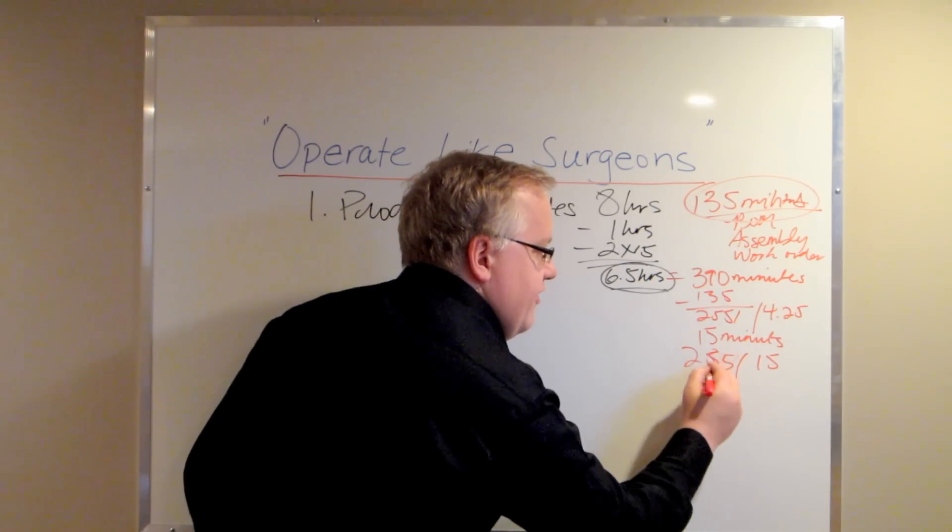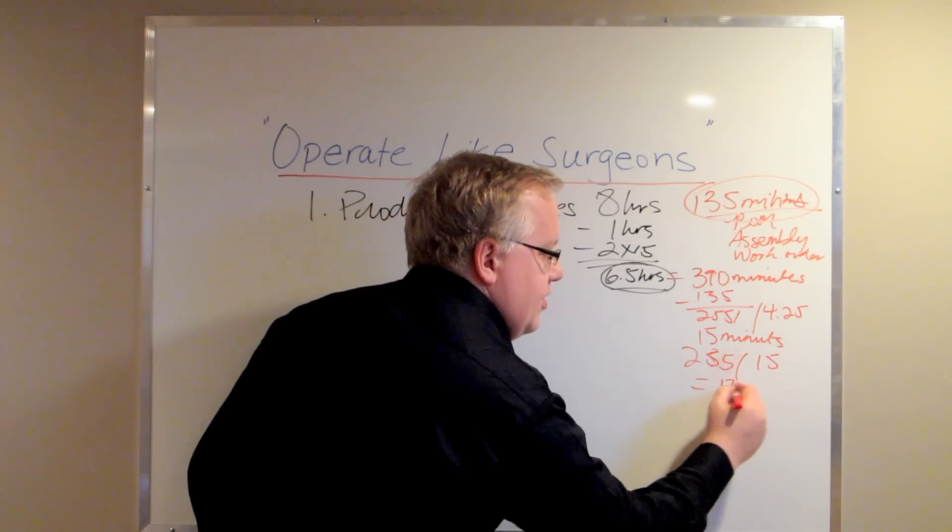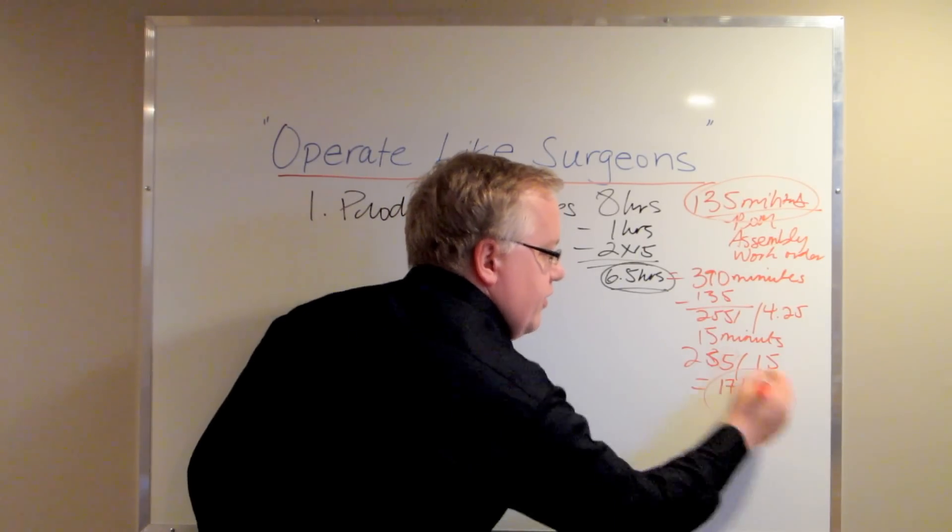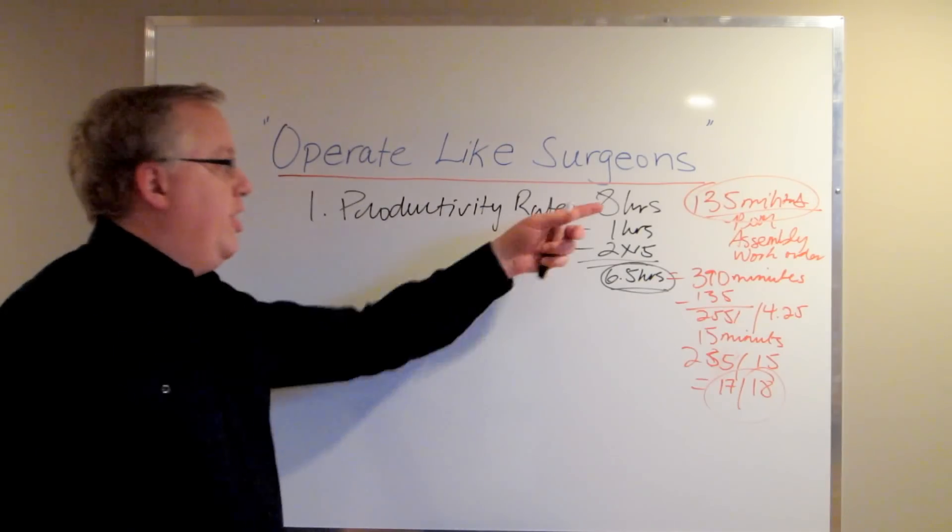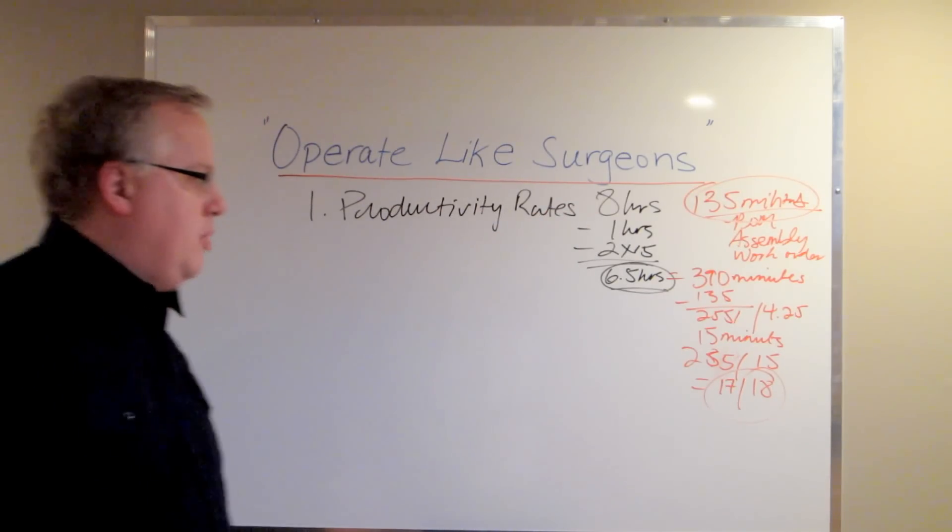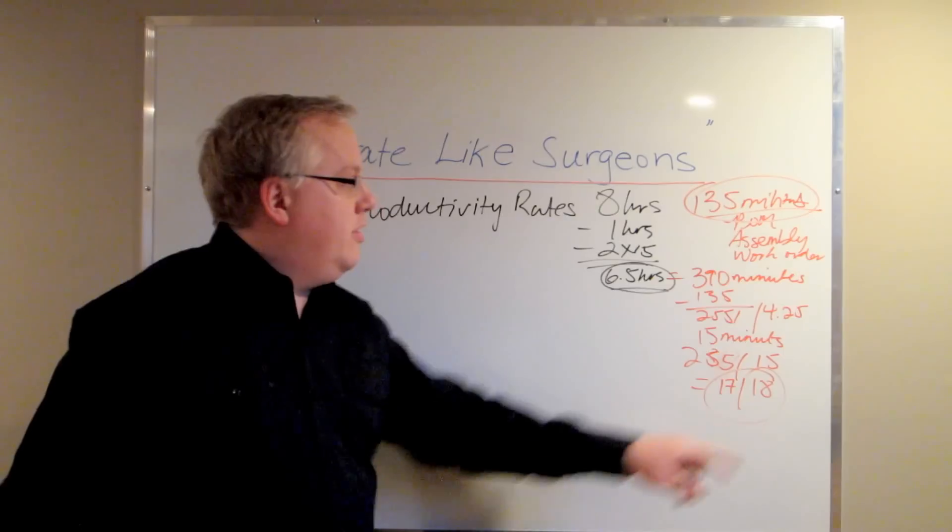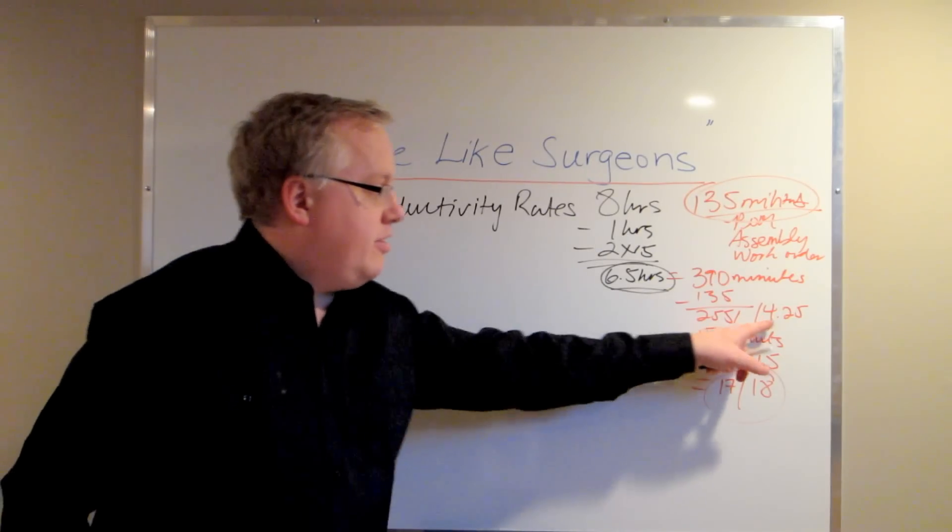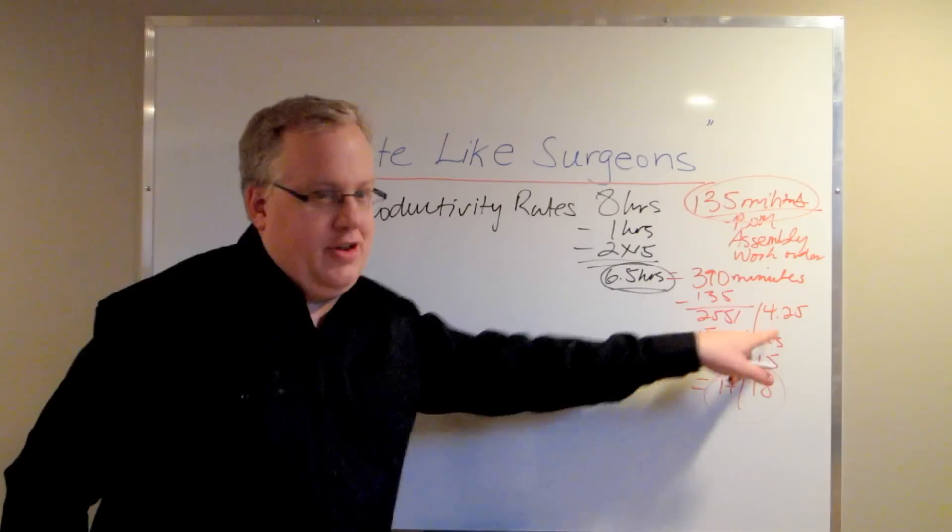255 divided by 15, you actually get the 17 or 18 units that this company was complaining they were only getting at an 8-hour shift. Bottom line is they were getting 17 to 18 units out of basically a 4 hours and 25-minute shift.